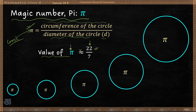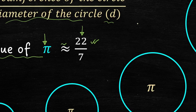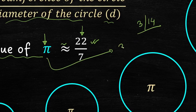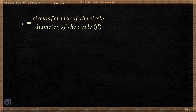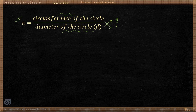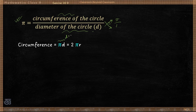Pi Day is celebrated all over the world on 14th March. The month is 3 and the day is 14, because the value of pi is 3.14 correct to two decimal places. Since π = circumference ÷ d, we can write: circumference = π × d. Substituting d = 2r gives circumference = 2πr.